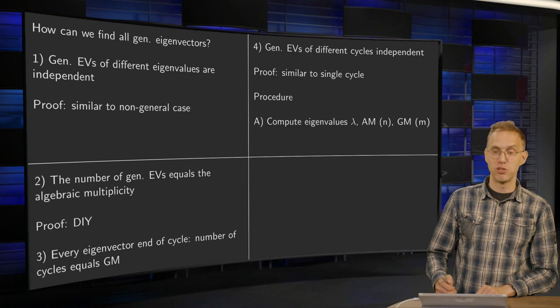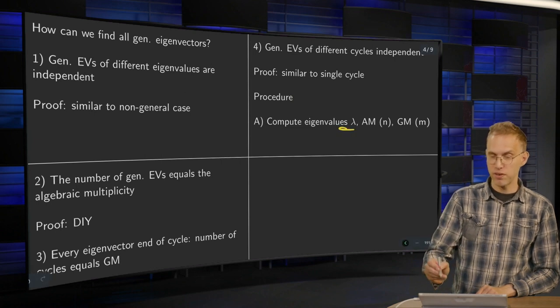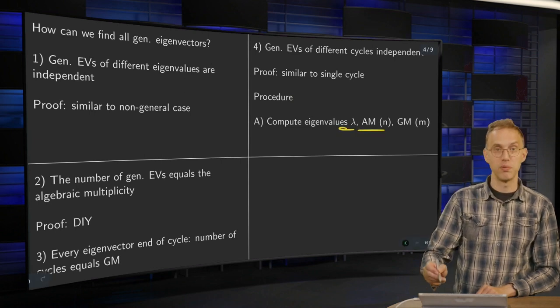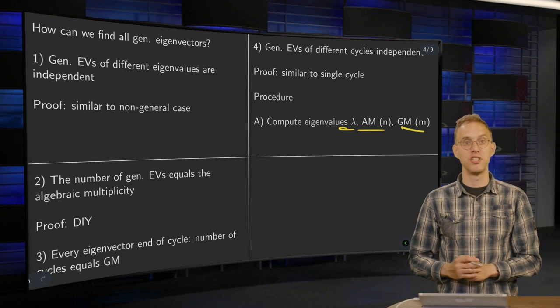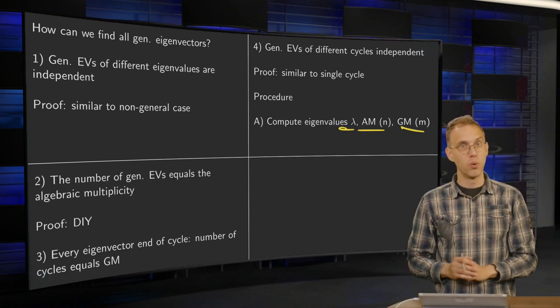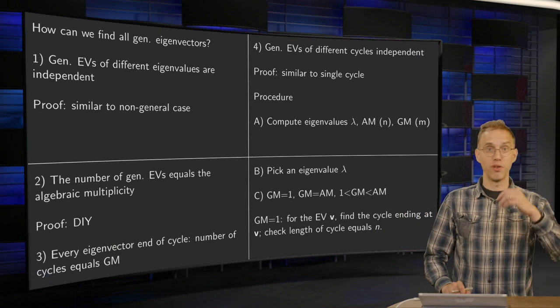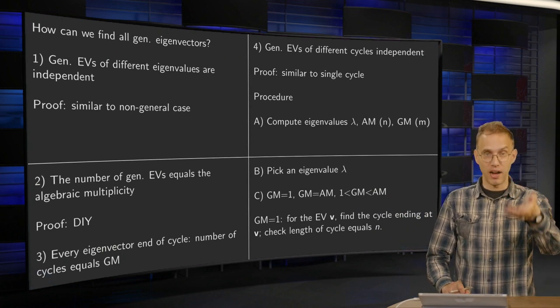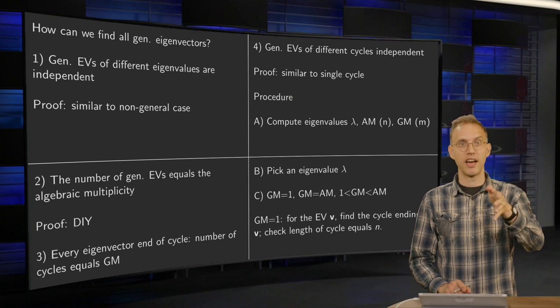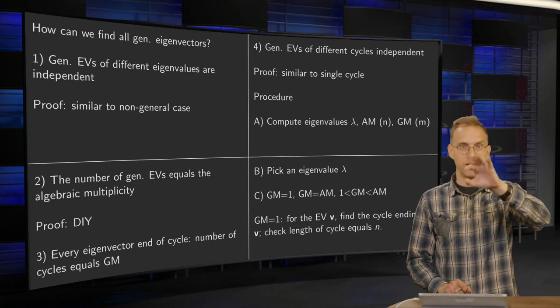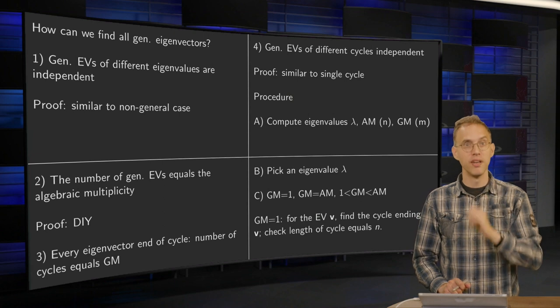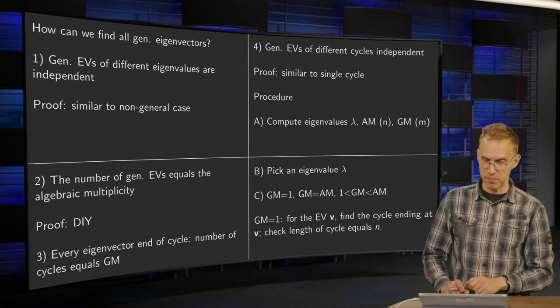So what are we going to do? First, we compute all eigenvalues of a matrix, the algebraic multiplicities n and geometric multiplicities m. Just as what you always did. Step A. Then we work on eigenvalue per eigenvalue basis. So we pick one eigenvalue λ and do our stuff, and then move on to the next one.